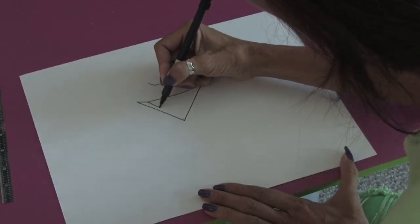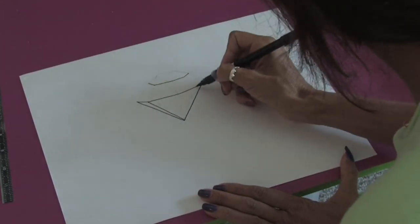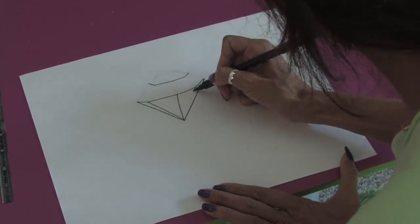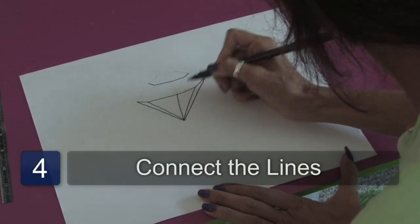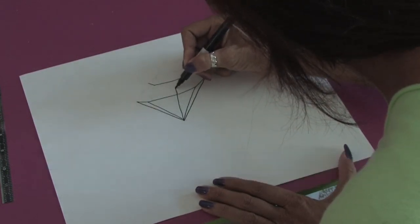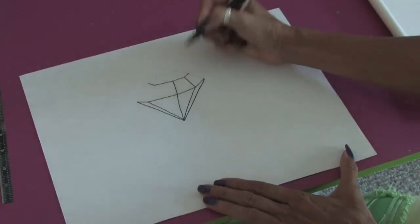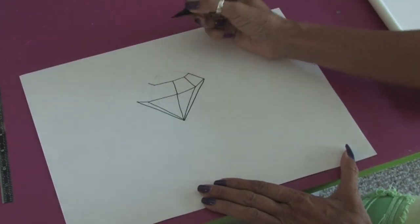Then we can start connecting all the lines from the corners where they meet and bring them down. So basically we're drawing a series of triangles. You can see where your points are, where the lines meet. We're just connecting those lines.